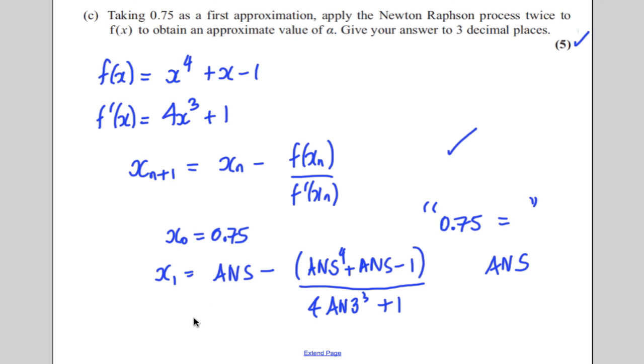If you hit equals, then you get x1 is 0.725 to 3 decimal places. And x2, by pressing equals again, you get yourself 0.724 to 3 decimal places, and you're done. You've picked up the 5 easy marks there, and that's it.